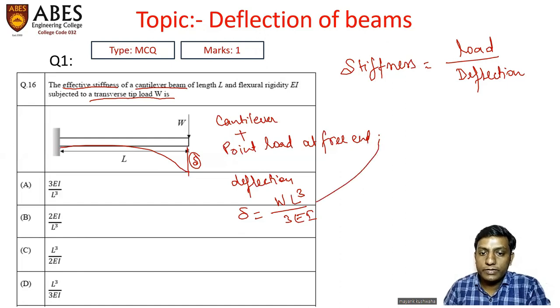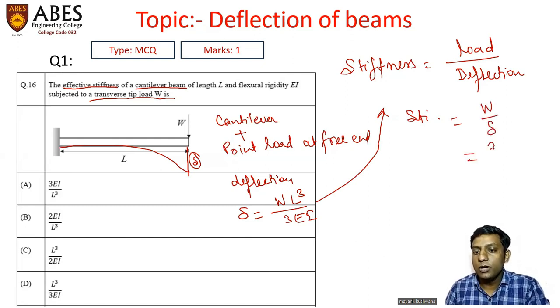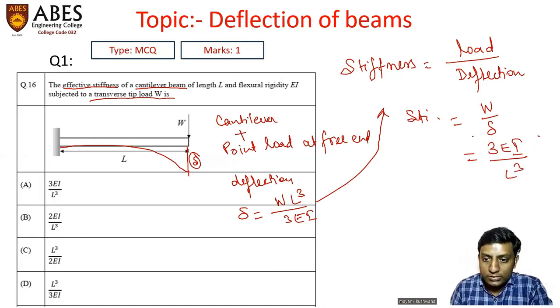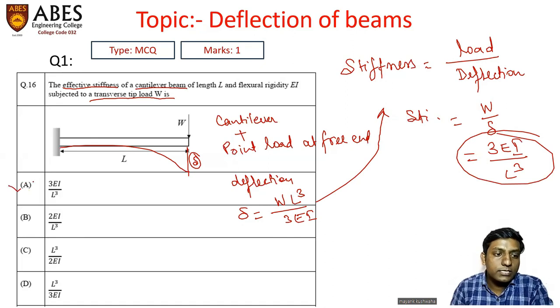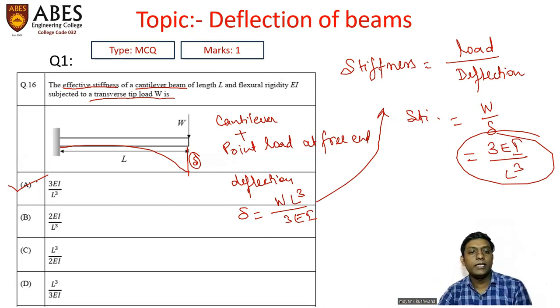So if we take this value then stiffness can be calculated as load per unit deflection or 3EI divided by L cube. So from this we can say that answer A is the right choice. This question was pretty easy and I hope every one of you would be able to understand this solution. Let us jump to the next question.